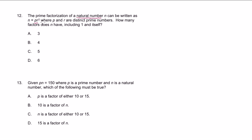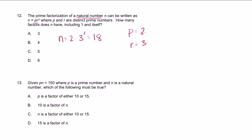They're saying this is some natural number that can be written this way. Let's just pick one example. If we set p equal to 2 and r equal to 3, then n equals p times r squared, which is 2 times 3 squared, equal to 2 times 9, which equals 18. This is just one instance — one n that satisfies these conditions. I could have picked 5 and 7, or 3 and 2, but all of them should have the same answer, because that's what this question is implying.